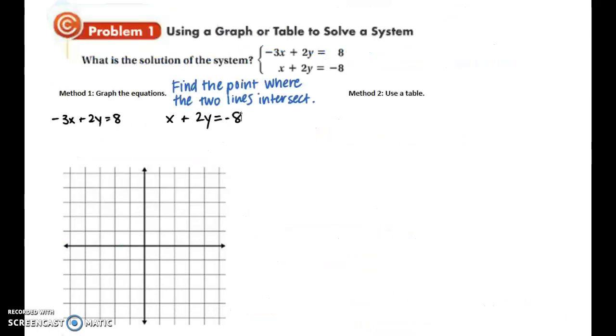In example one, we're given a system of linear equations that are currently in standard form, ax plus by equals c, which is a form that we discussed last chapter. We want to solve this system by using a graph as well as using a table. So first let's focus on graphing. Now, like I said, they're currently in standard form. You could immediately find the x and y intercepts if you'd like, or we can put them into slope-intercept form and easily find the slope and the y intercept, and graph that. So that's what I'm going to be doing now.